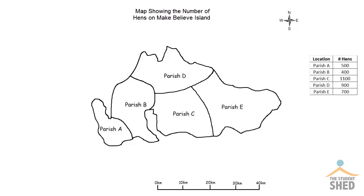Now we're going to look at how to create a dot distribution map. I've created a make-believe island here that has a few parishes: Parishes A, B, C, D, and E.